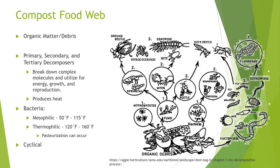During this stage, fungi and actinomycetes are able to break down tough cellular materials like cellulose and lignins that are still present in the compost. As the compost cycle progresses, the natural succession of organisms and decomposers will continue. It is important to remember that compost is a living ecosystem that is subject to wide variability across location and time.